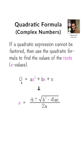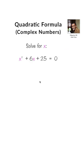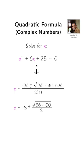Remember you need zero on one side of your equation. So let's say you're solving for x: x squared plus 6x plus 25 equals 0. Our a is 1, b is 6, and c is 25.